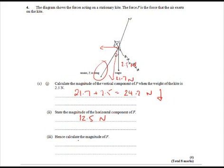So calculate the magnitude of F. All we have to do again now is Pythagoras. We've got the vertical part, we've got the horizontal part. So we put those two back together again. We get 24.2 squared plus 12.5 squared, take the square root of all that, and you end up with 27.2 newtons.